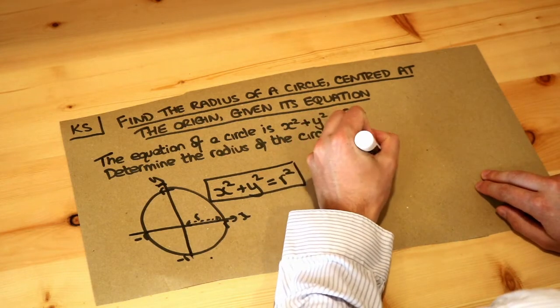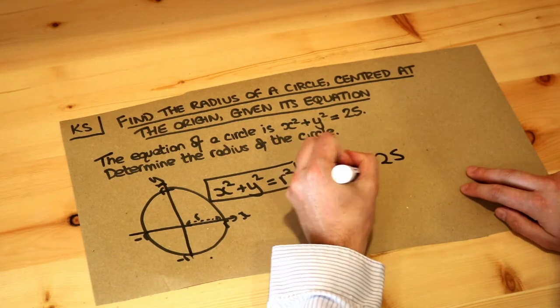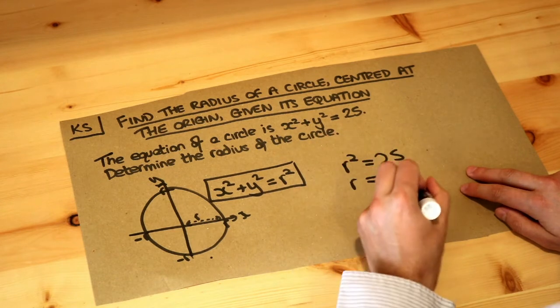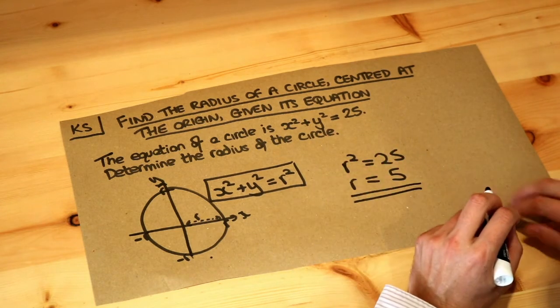So if r squared is equal to 25, then if we square root both sides then r is 5 and that is the radius of the circle.